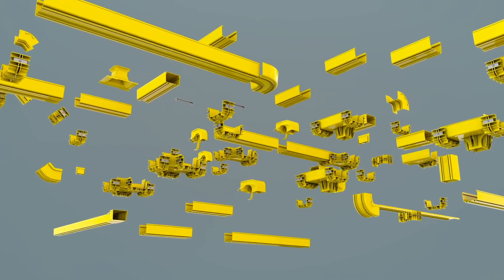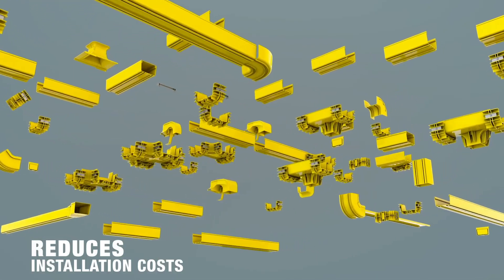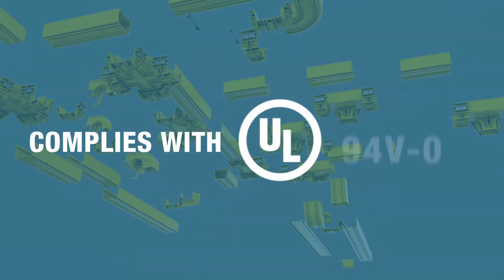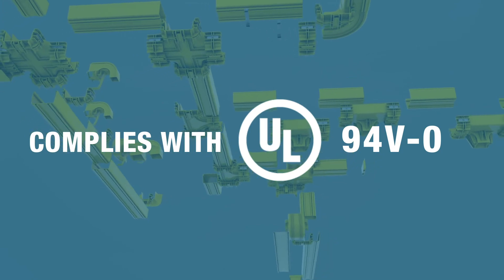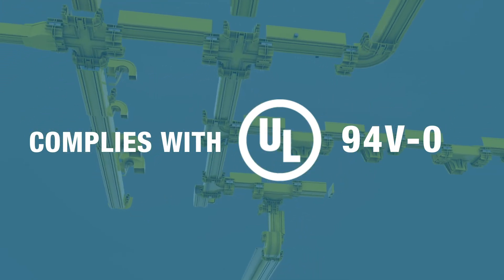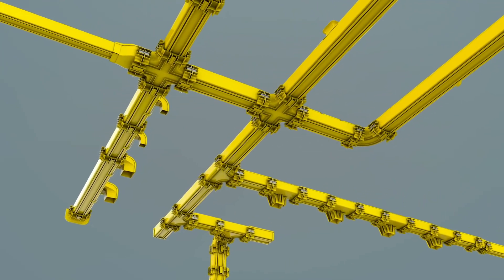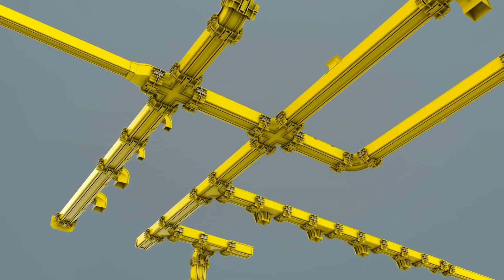Panduit's Fiber Runner cable routing system reduces installation costs when compared to typical cable routing systems. The Fiber Runner has been rated to comply with UL 94V-0, which is one of the more stringent flame test requirements. These factors make Fiber Runner the ideal choice for routing cables in your telecom room or data center.